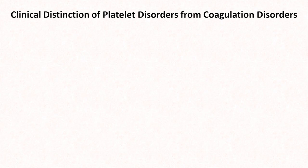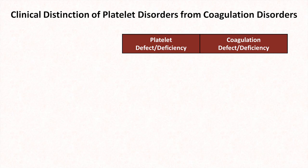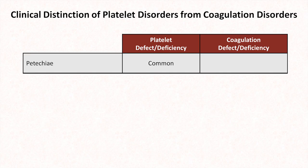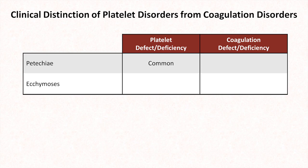I'll end this introductory video on a quick overview of how to clinically distinguish platelet disorders from coagulation disorders, specifically those which cause bleeding. For platelet disorders, which may be either a functional platelet defect or a deficiency, petechiae, which are very small non-blanching red spots on the skin, are common. This is a classic physical finding in thrombocytopenia, which is another name for low absolute platelet count. Ecchymosis, which is a fancy term for bruises, are usually small.